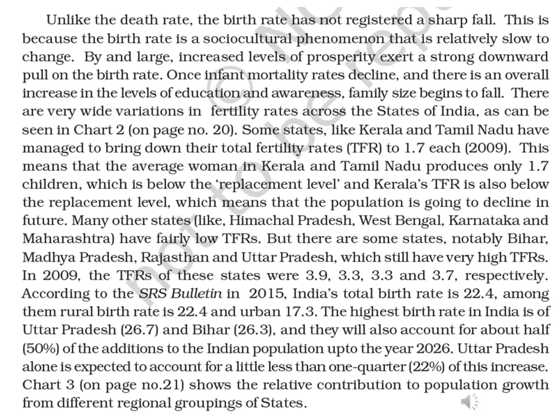There are very wide varieties in fertility rate across the states of India, as can be seen in chart 2. Some states like Kerala and Tamil Nadu have managed to bring down their total fertility rate to 1.7 each in 2009. This means that the average woman in Kerala and Tamil Nadu produces only 1.7 children, which is below the replacement level. Kerala's TFR is also below the replacement level, which means that the population is going to decline in future.